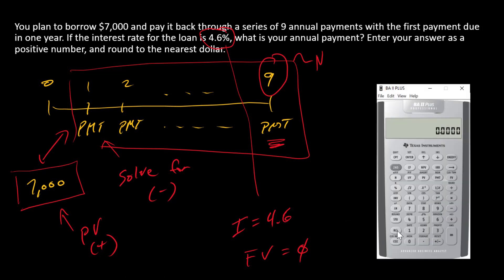All right. So now we just need to enter these into the calculator and solve. So $7,000 goes into PV. 4.6 goes into I. 9 goes into N. And 0 goes into FV.